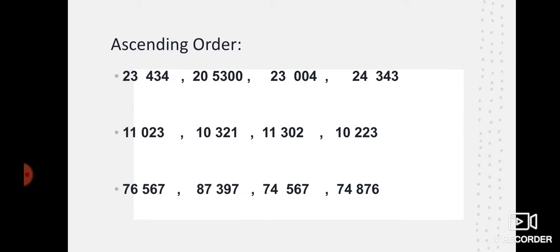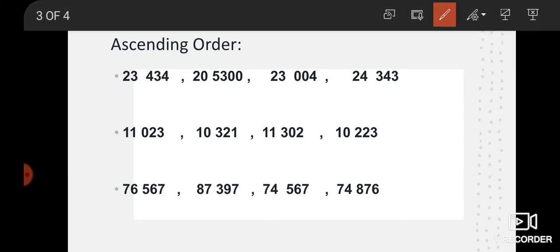Moving ahead, our next topic is ascending order — from smallest to greatest value, that is, from small to large. So students, how do we solve this? You have to look at where different numbers start. First of all, you have to note: are the number of digits equal? Let's see — yes, how many digits are there in all of them?